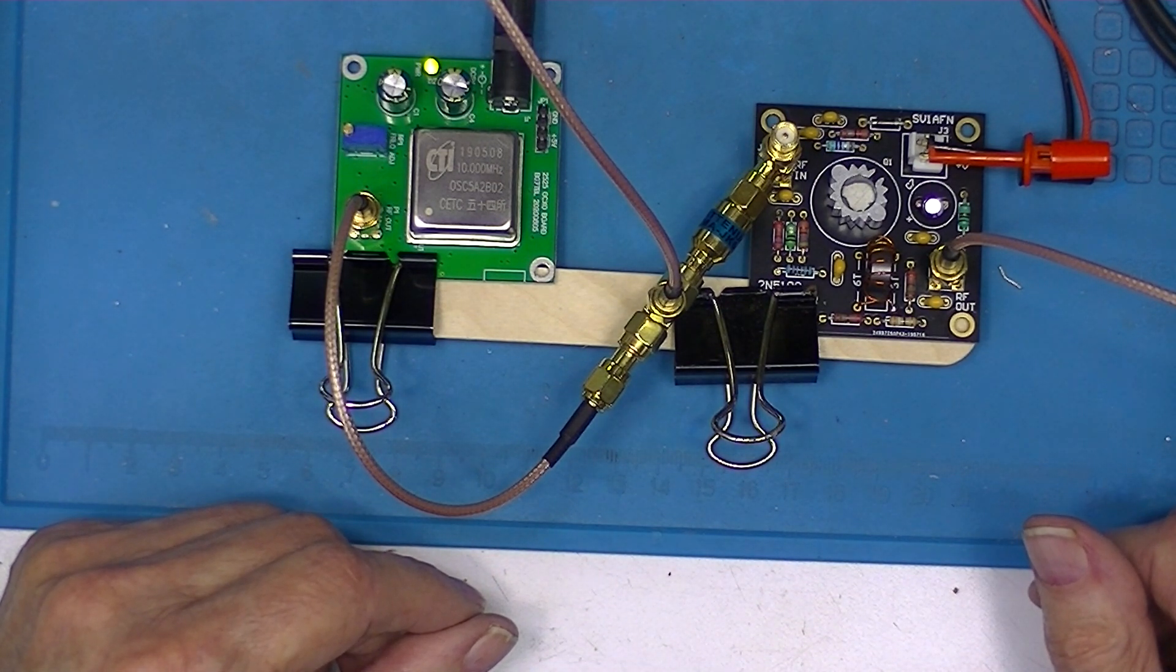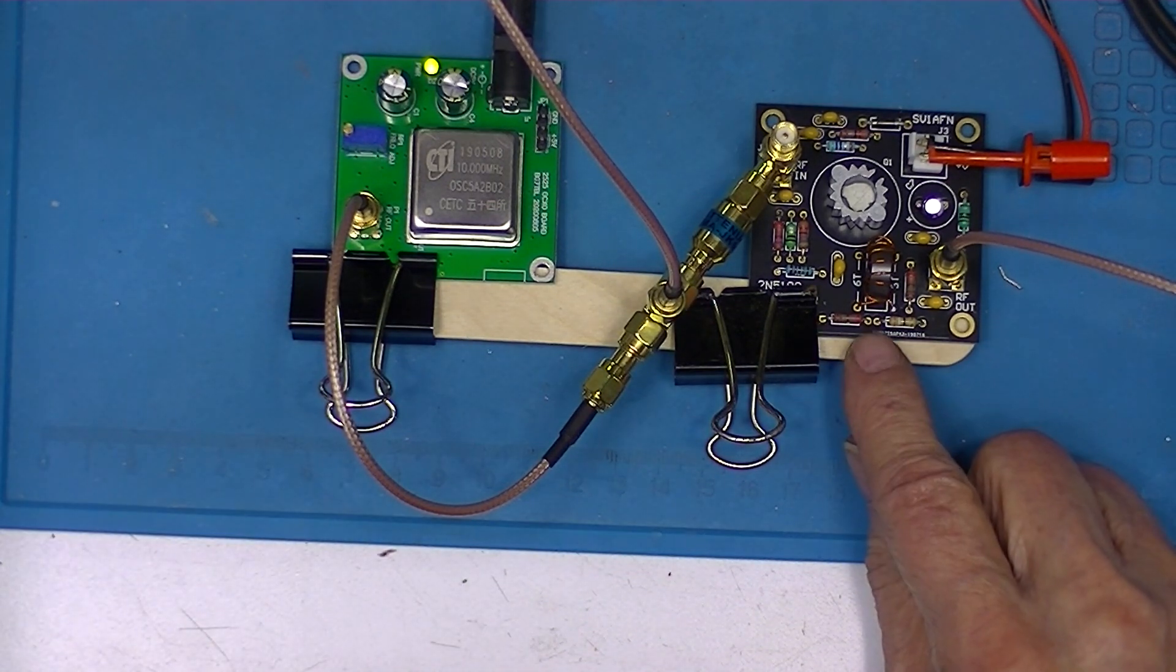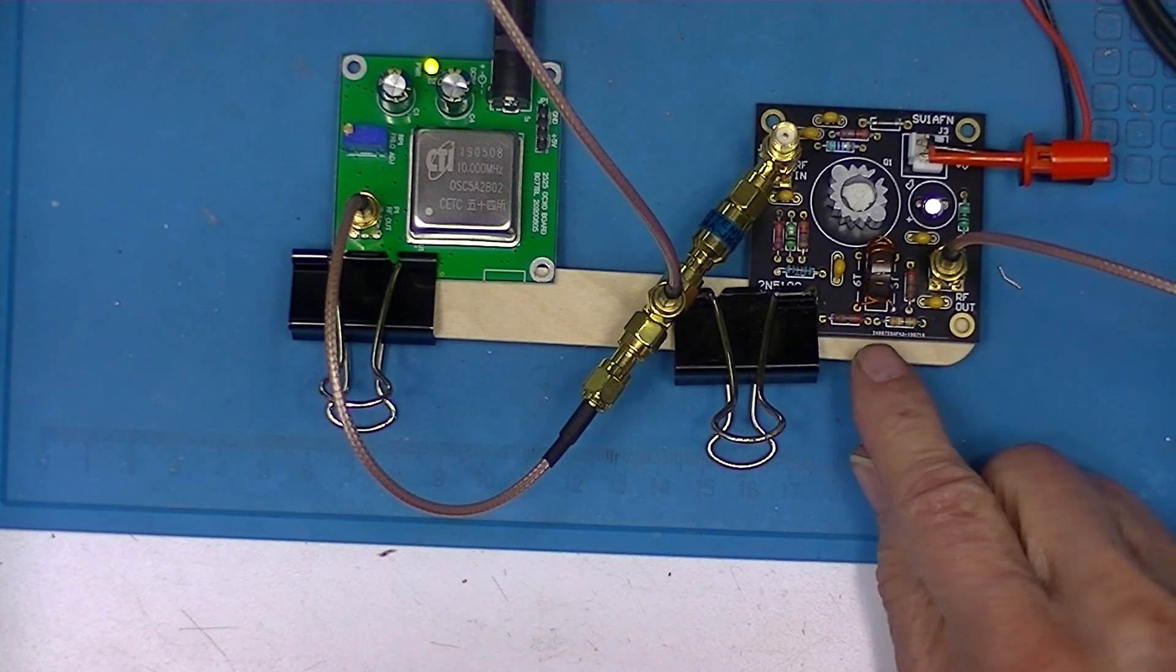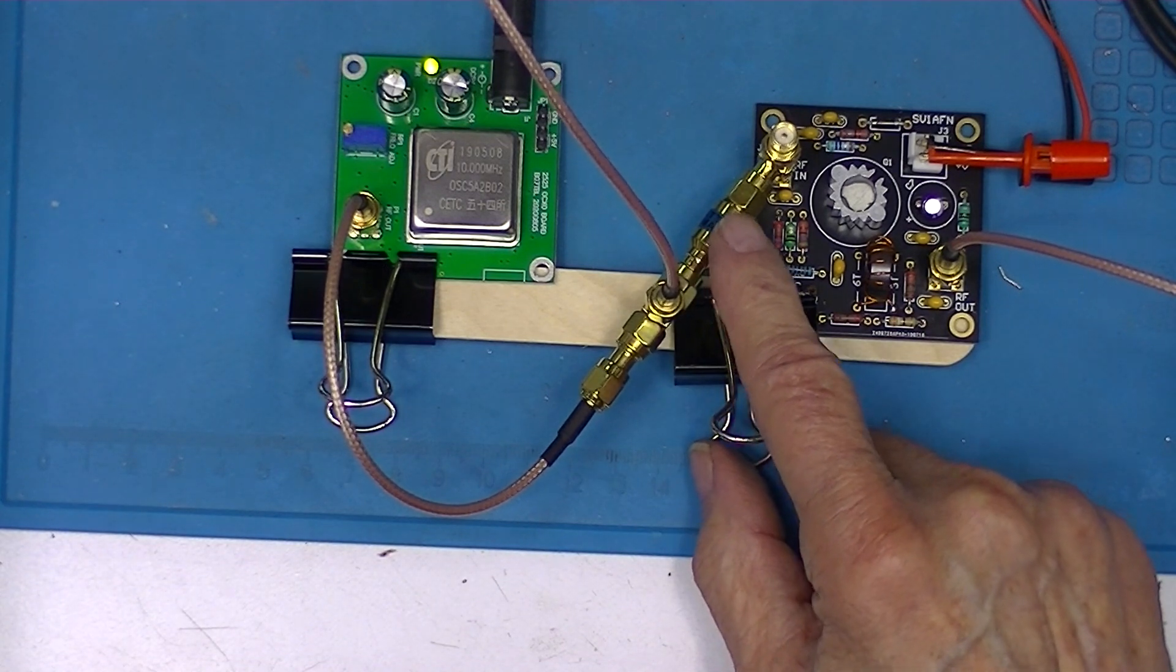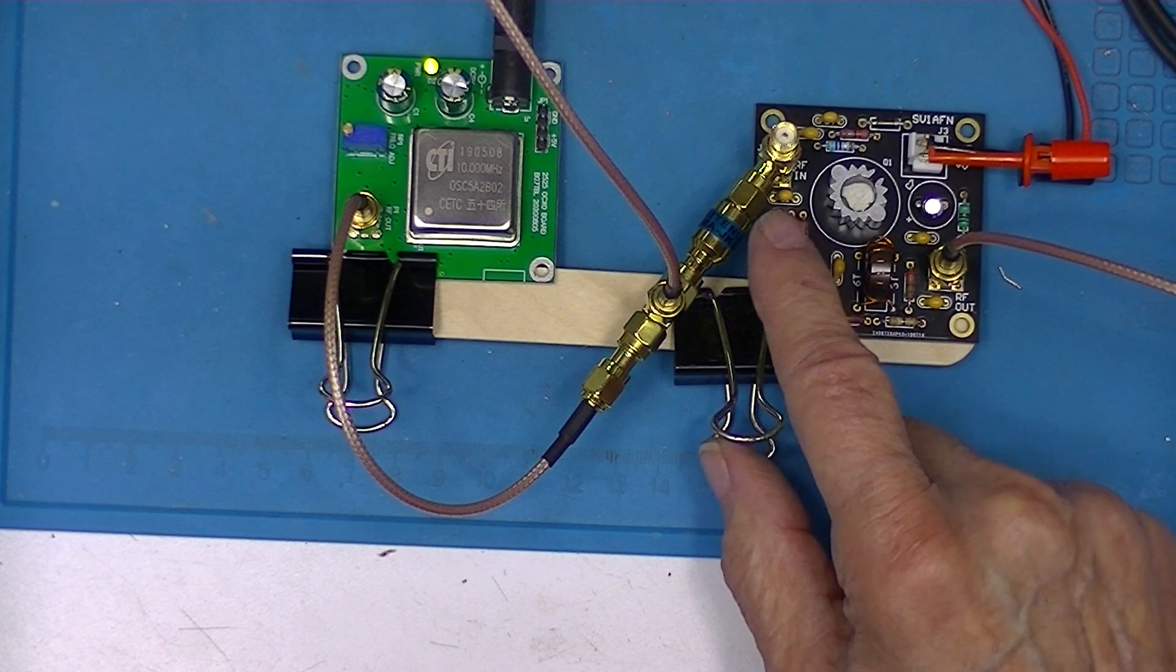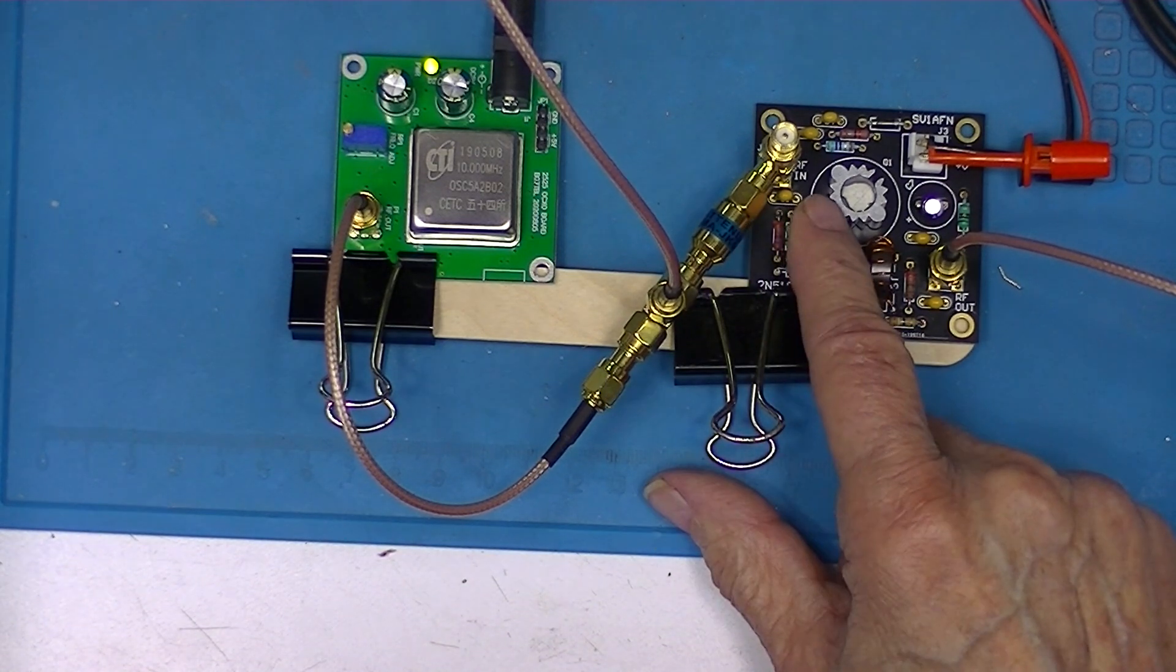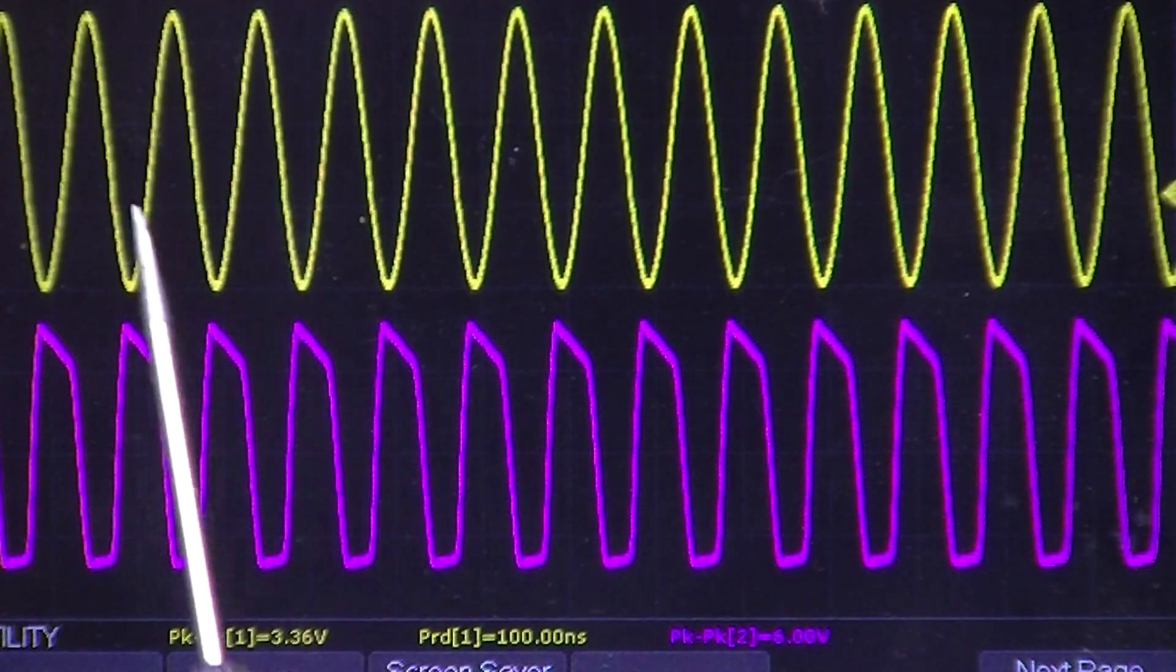This amplifier is designed as a receive amplifier, so I anticipate I'll need a pad of some sort, an attenuator, so I don't overload the base bias on this transistor.